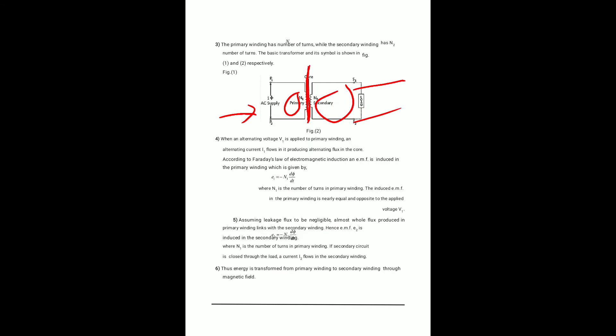When alternating voltage V1 is applied to the primary winding, an alternating current I1 flows, producing an alternating flux in the core. According to Faraday's law of electromagnetic induction, an EMF is generated: E1 = −N1 dΦ/dt. The induced EMF in the primary winding is nearly equal and opposite to the applied voltage V1. Assuming leakage flux is negligible, almost all flux produced by the primary links with the secondary.